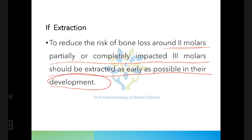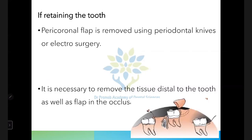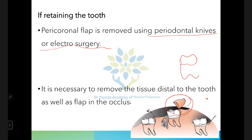If planning to retain the tooth, the pericoronal flap must be removed using periodontal knives or electrosurgery. It is not sufficient to remove only the occlusal aspect — you must also remove the distal aspect. If the distal tissue is not removed, pocket formation distal to the third molar will occur, which is very difficult to treat.